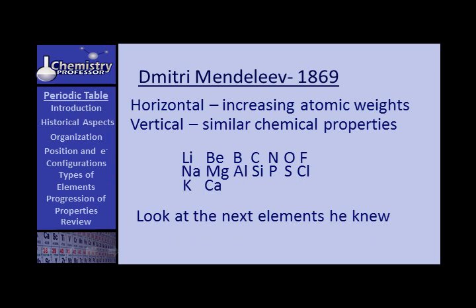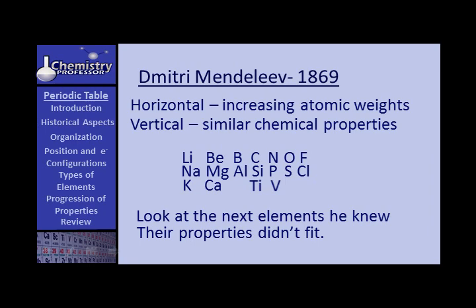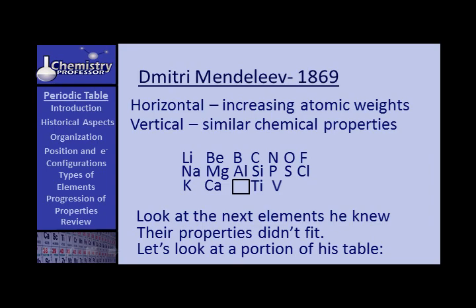One thing that he did that was different: look at the next elements that Mendeleev knew after calcium — titanium and vanadium. When he put them in place, they didn't match. When he took the properties of boron and titanium and averaged them, he did not get the properties of aluminum as expected. Carbon and silicon are very similar, but not at all like vanadium — more like titanium. The properties didn't fit, so he moved the elements over, recorded a blank, and said, 'This is an element that has not yet been discovered.' He did this in a number of places.